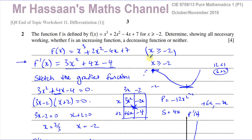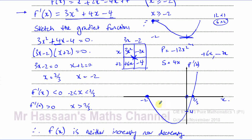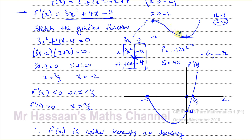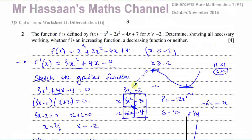For example, if the question had defined the function for x less than negative 2, then you would say it's always increasing, because the gradient is always positive in that region. But this question says x is greater than or equal to negative 2, so we can see that for some parts of its domain the function is decreasing, and for some parts it is increasing. So the answer is neither.